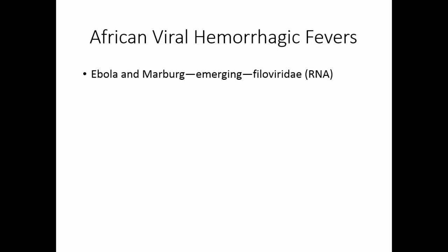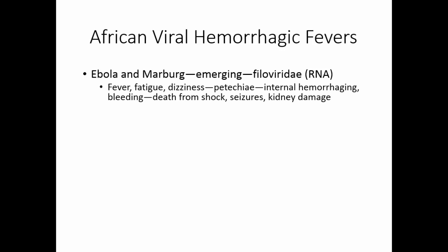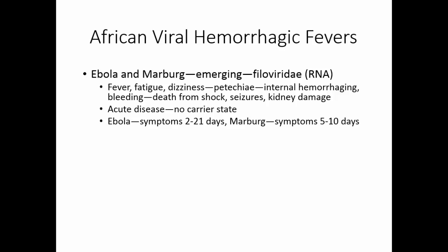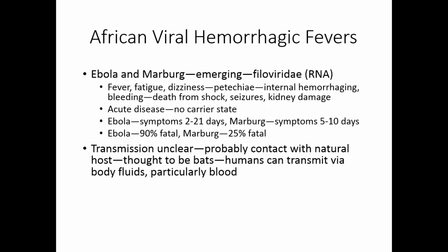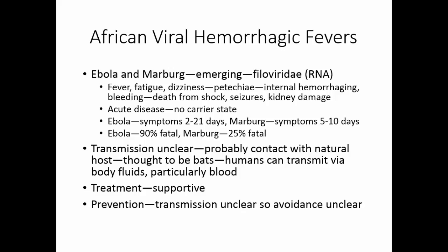The African viral hemorrhagic fevers — Ebola and Marburg — are emerging diseases caused by Filoviridae, RNA viruses. Symptoms include fever, fatigue, dizziness, petechiae, internal hemorrhaging, and bleeding. Death is usually from shock, seizures, or kidney damage. This is an acute disease with no carrier state. With Ebola, symptoms take 2 to 21 days to emerge; with Marburg, 5 to 10 days. Ebola is 90% fatal; Marburg is 25% fatal. Transmission is unclear, probably through contact with the natural host thought to be bats. Once humans have it, they can transmit it via body fluids, particularly blood. Treatment is primarily supportive, replacing fluids. Since transmission is unclear, prevention is also unclear, but careful handling of body fluids from infected individuals is essential.